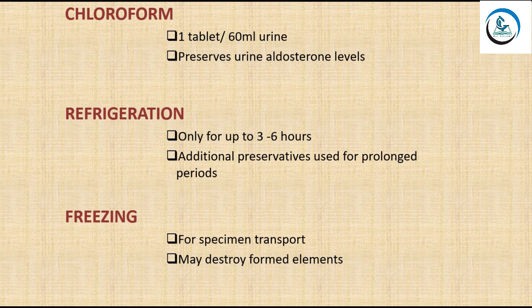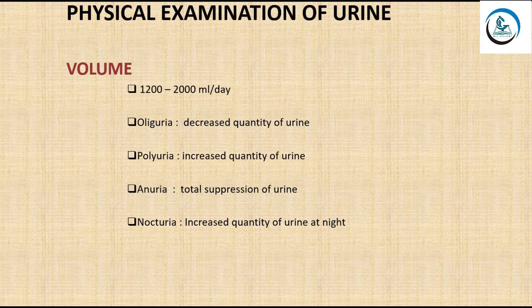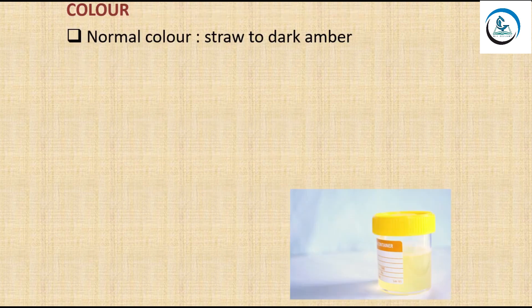The physical examination of urine begins with volume. The normal urine volume is 1200 to 2000 ml per day. Oliguria is a condition with decreased urine quantity, polyuria is increased urine quantity, anuria means total suppression of urine, and nocturia means increased quantity of urine at night.